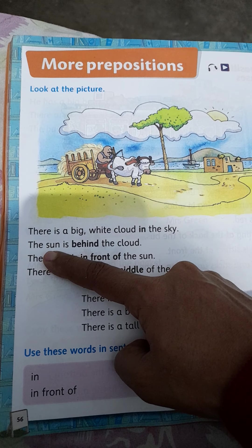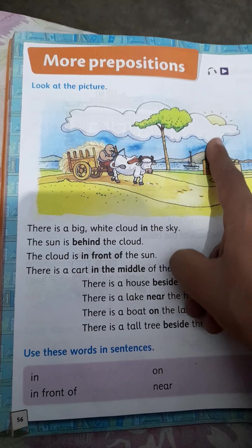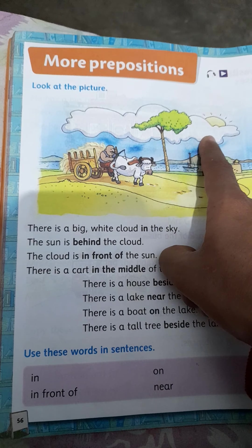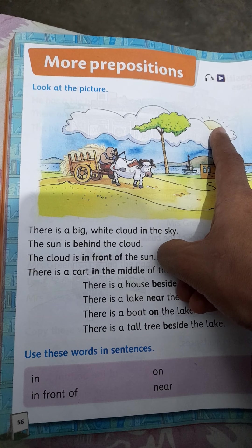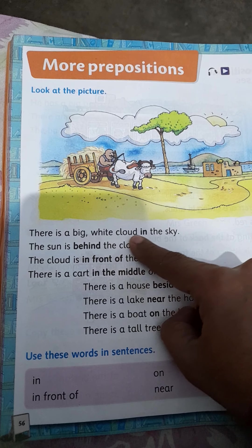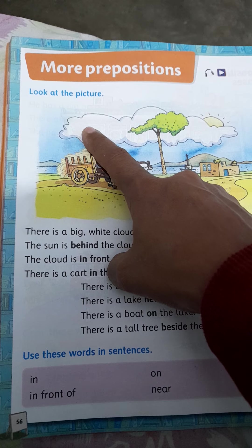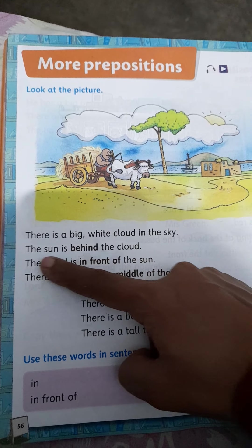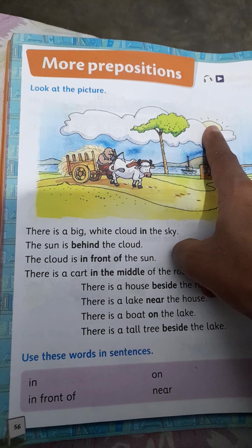Sun means suraj. Suraj badal ke pichay hai. Look at this picture - this is the cloud and this is the sun. Sun is behind the cloud. Cloud ke pichay sun hai. 'In' means may. This line is telling that this cloud is in the sky. The sun is behind the cloud.